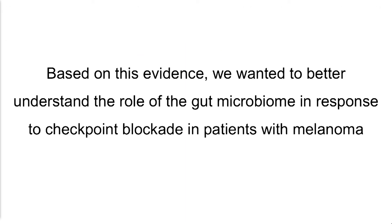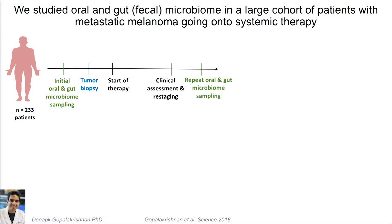We were inspired by these findings and wanted to better understand the role of the gut microbiome in response to checkpoint blockade — studying this in patients with metastatic melanoma. I had seen Tom Gajewski's data at the Society for Immunotherapy of Cancer meeting in 2014, and got up to the mic and asked whether he had studied this in patients. He had not, so I saw that as an opportunity. We ran back to Texas and signed patients onto a protocol where we took an initial oral and gut microbiome sample, performed a tumor biopsy when feasible, started therapy, restaged patients, and repeated the microbiome sample. In a year and a half, we got samples from over 200 patients — we now have samples from over 500 patients — with the vast majority treated with checkpoint blockade, specifically anti-PD-1.